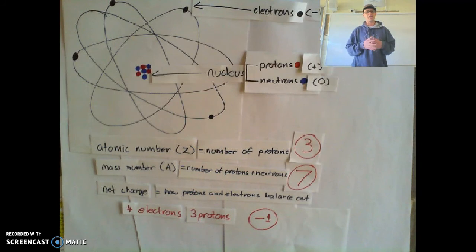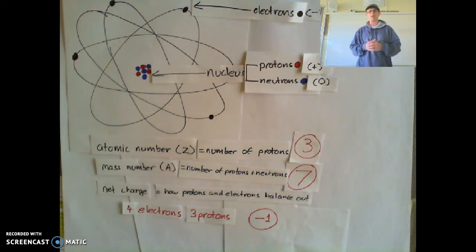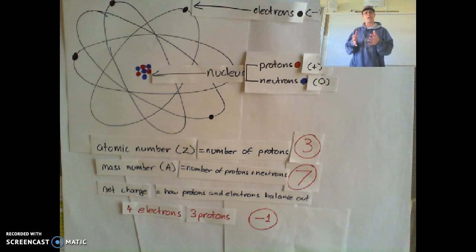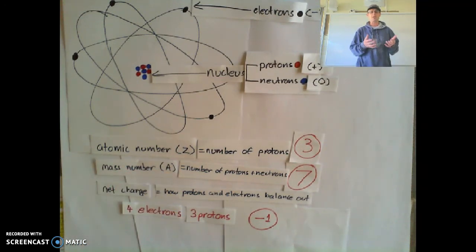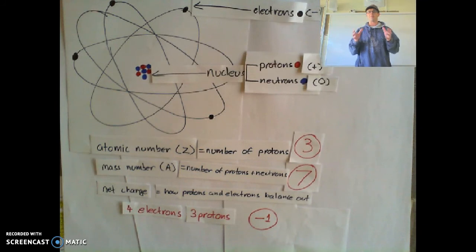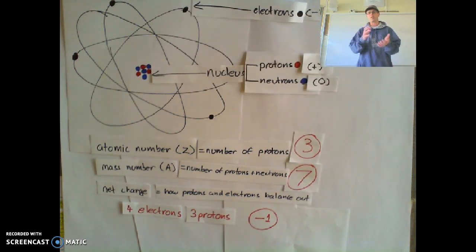Just to recap some of the things in this video — the characteristics for an atom, some of the ways that we can describe them. We can use atomic number, which is written as a capital Z, and the atomic number is the number of protons within the atom. If the number of protons changes, it changes the type of atom it is. We have mass number, represented by a capital A — it is the number of protons and neutrons in the nucleus, not just the neutrons. There's no characteristic for just describing the neutrons. And then we have net charge — how protons and electrons balance each other out.